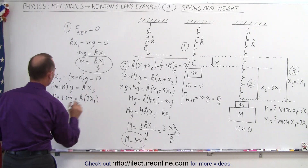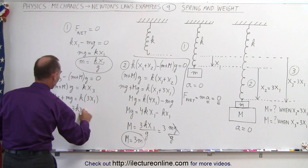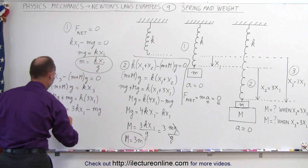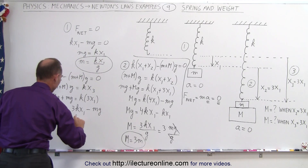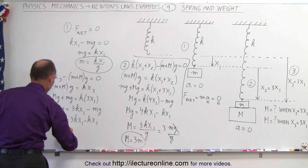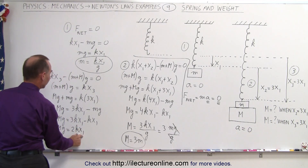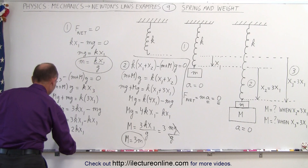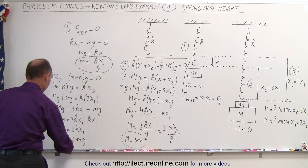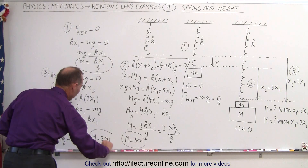Moving little mg across, we have big Mg equals 3kx1 minus mg. And again, mg equals kx1. So big Mg equals 3kx1 minus kx1, which means big Mg equals 2kx1. And since kx1 equals mg, we can say big Mg equals 2 times little mg. Since the g's cancel, big M equals 2 times small m.